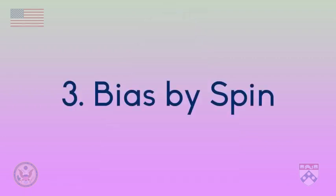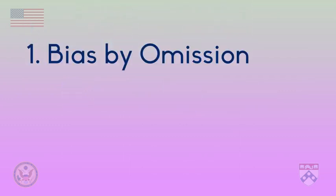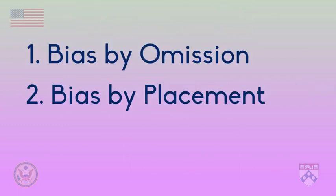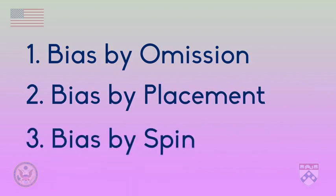To wrap up, we've introduced bias by omission, bias by placement, and bias by spin. Later in this unit, we'll spend more time with these topics and discuss how media literacy can help us recognize and deal with them. Next, we're going to read about how media bias can affect people's decisions.